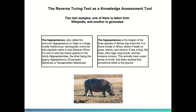Given that generative models are very advanced now, it is really hard to distinguish real objects from artificial ones. One particular kind of reverse Turing test for knowledge assessment is a language model-based reverse Turing test, where the objects are fragments of text. For example, here we have two texts — one taken from Wikipedia and another generated with a language model. Which one is which?